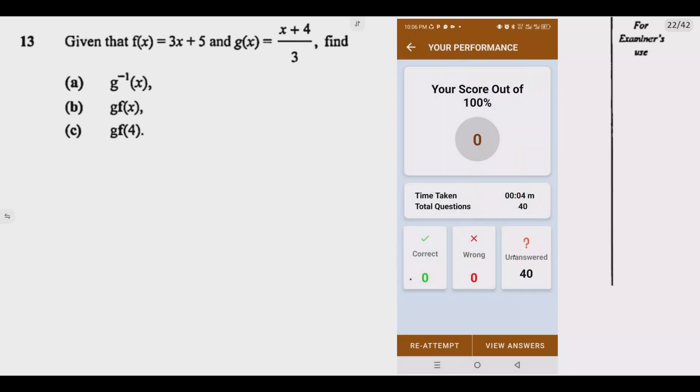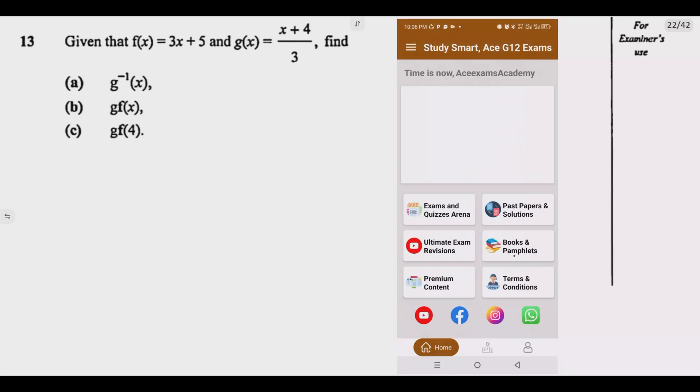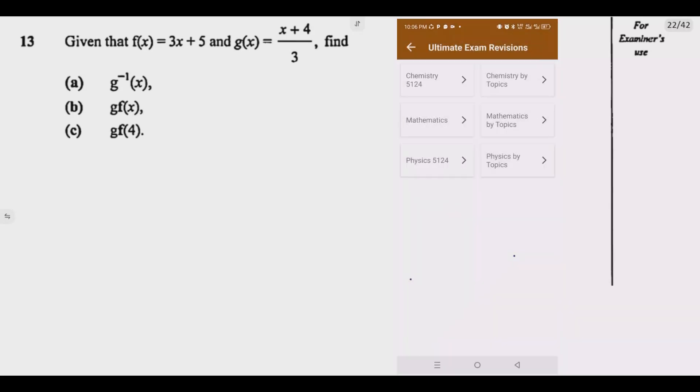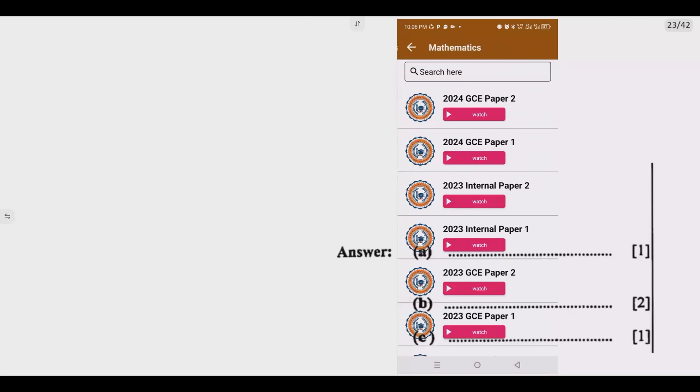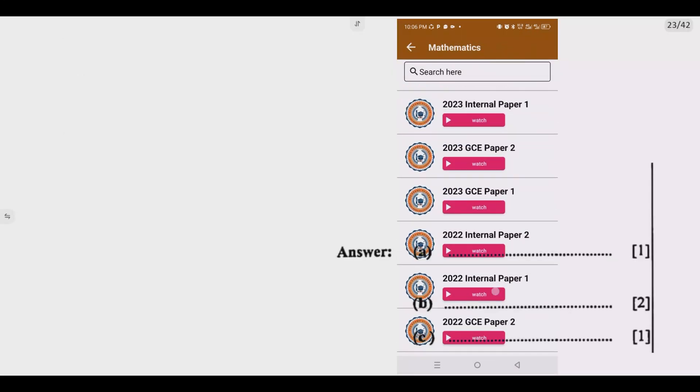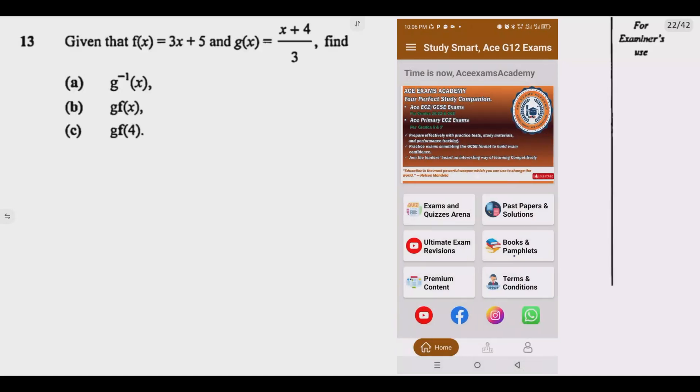Again, this is a question that always comes. It's just a matter of you understanding the principle. If you notice the marks, the first one is one mark, two marks, and then one mark. So we have four marks to solve for here.